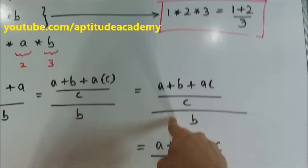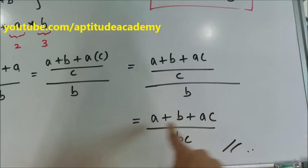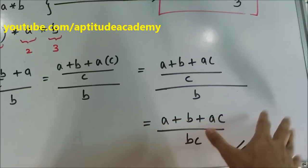C will come down here. So you will have A plus B plus AC, the whole divided by BC. That's your answer.